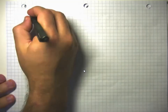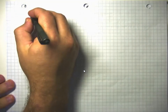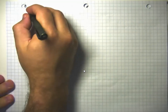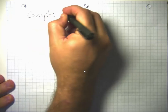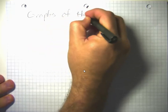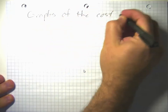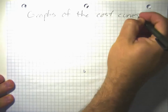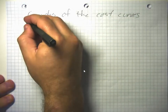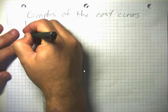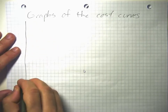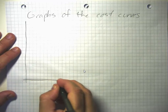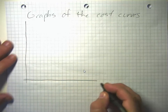Now that we have formulas for the cost functions, let's go ahead and look at graphs of the cost curves. I'm going to start with a case where we have decreasing returns to the variable inputs that start right away.